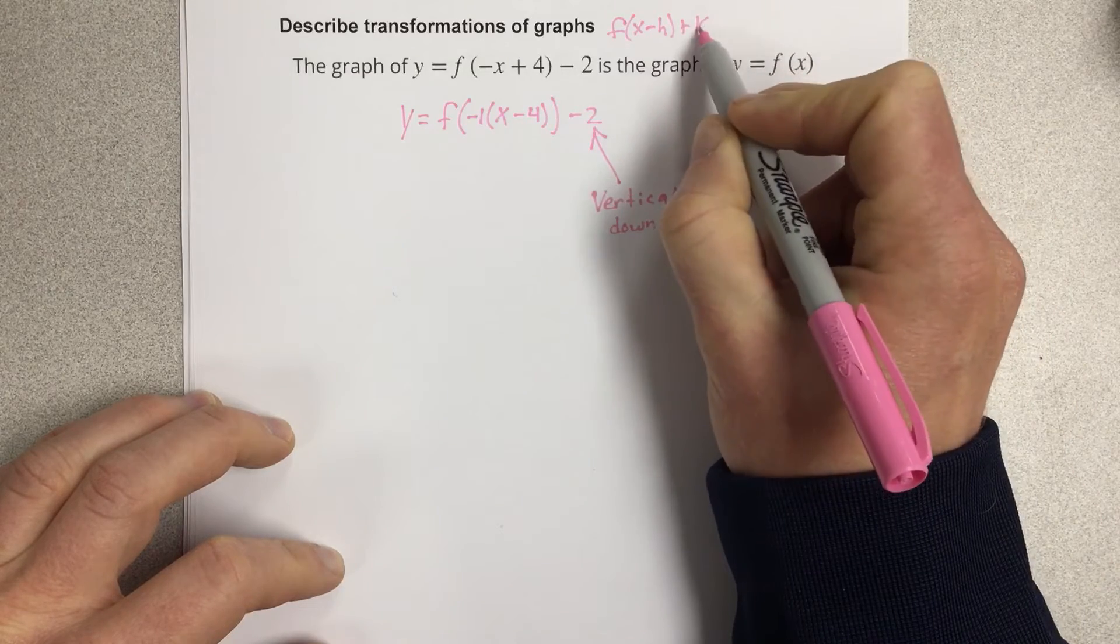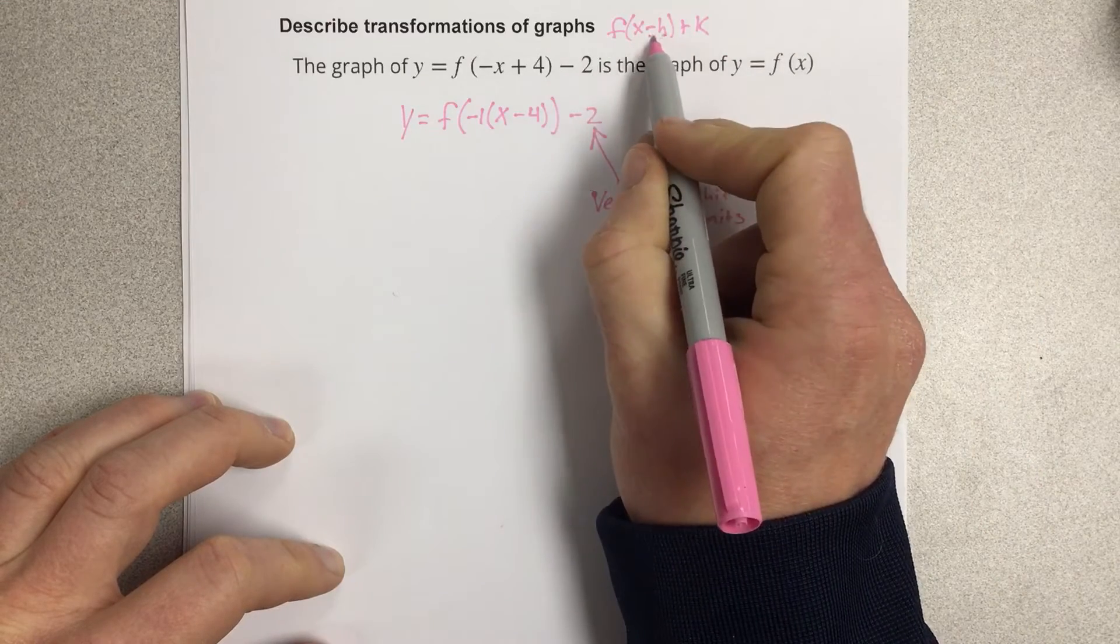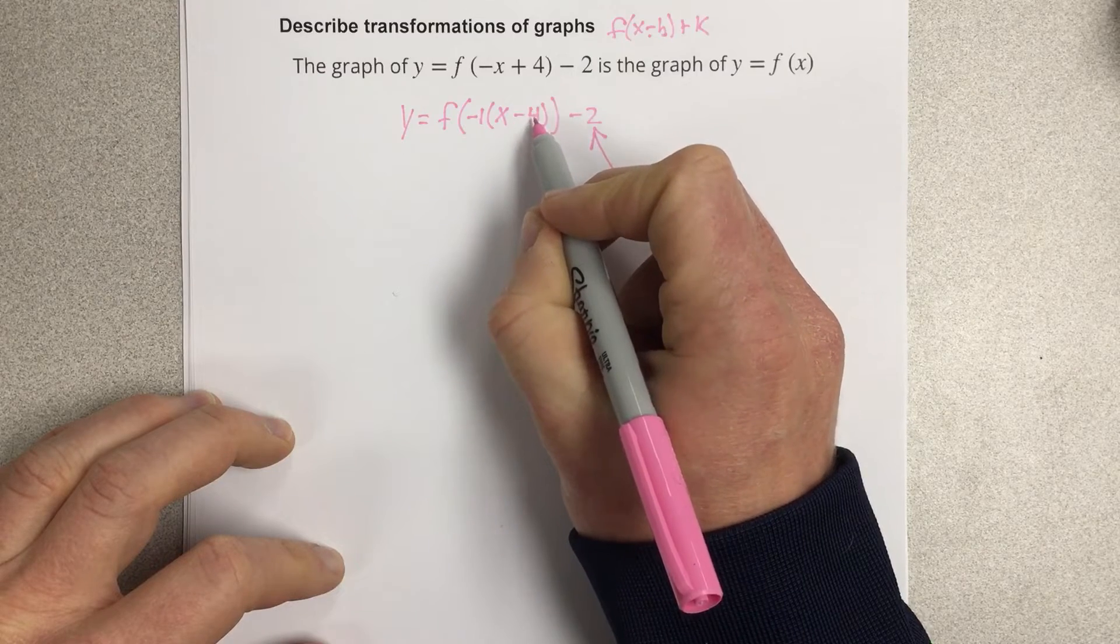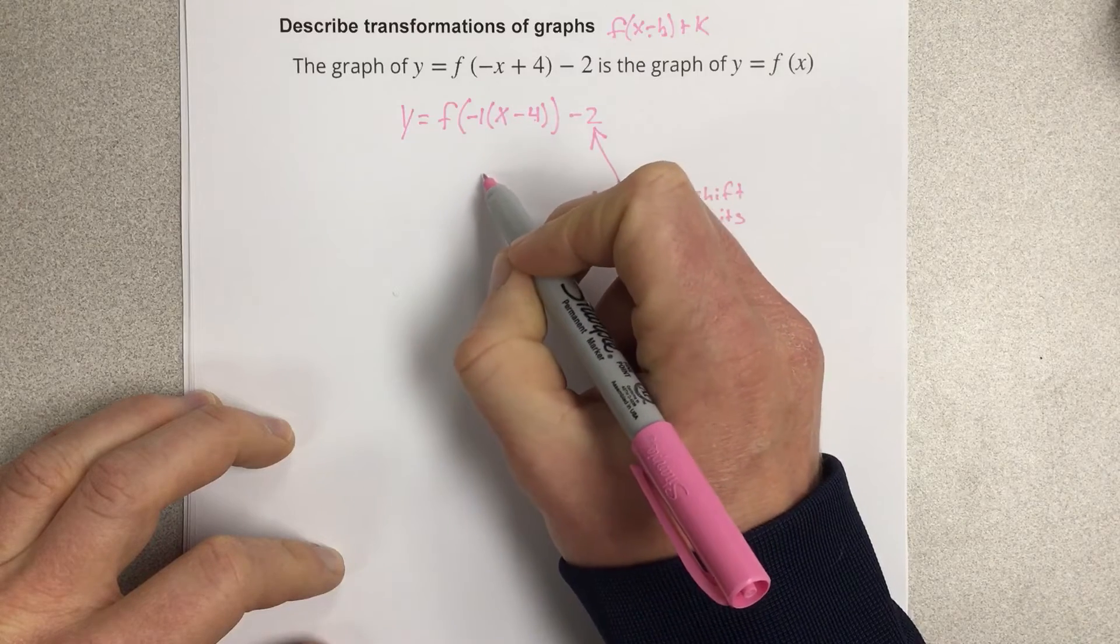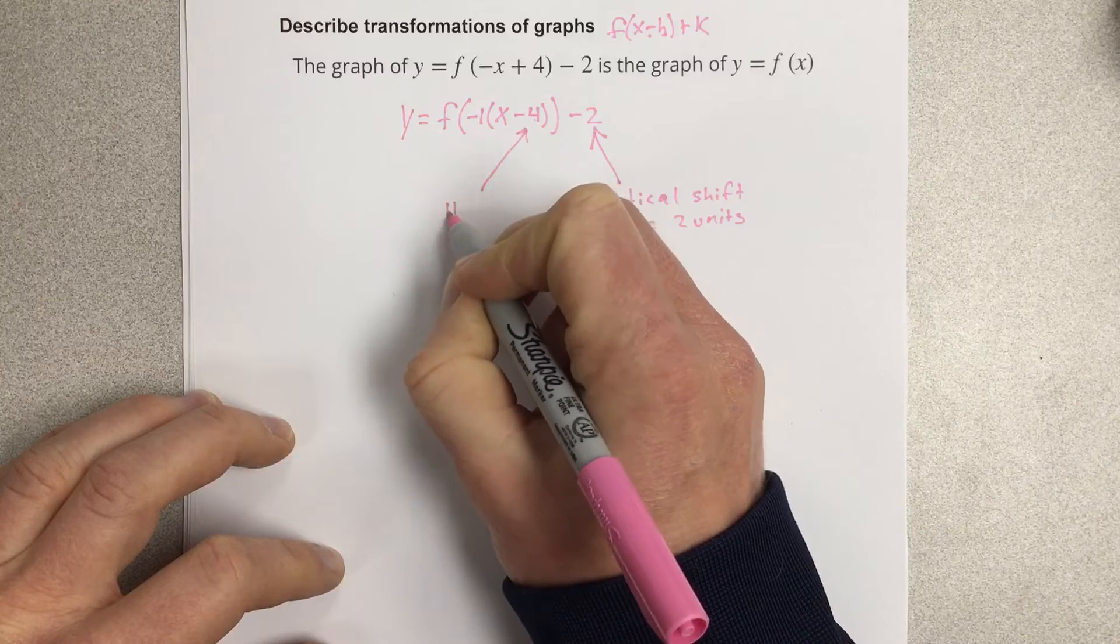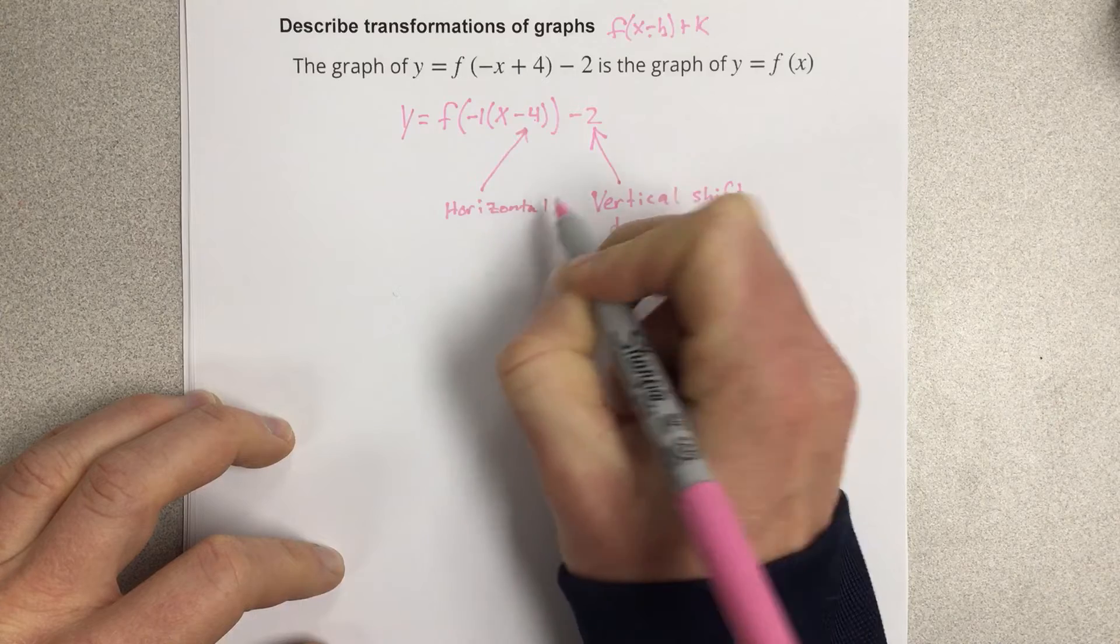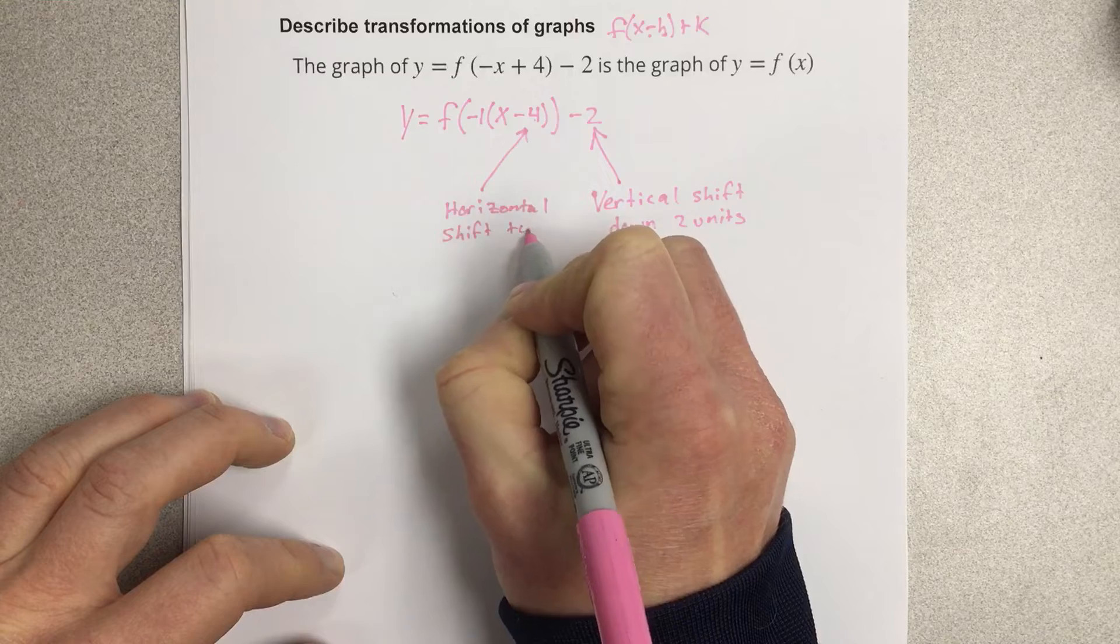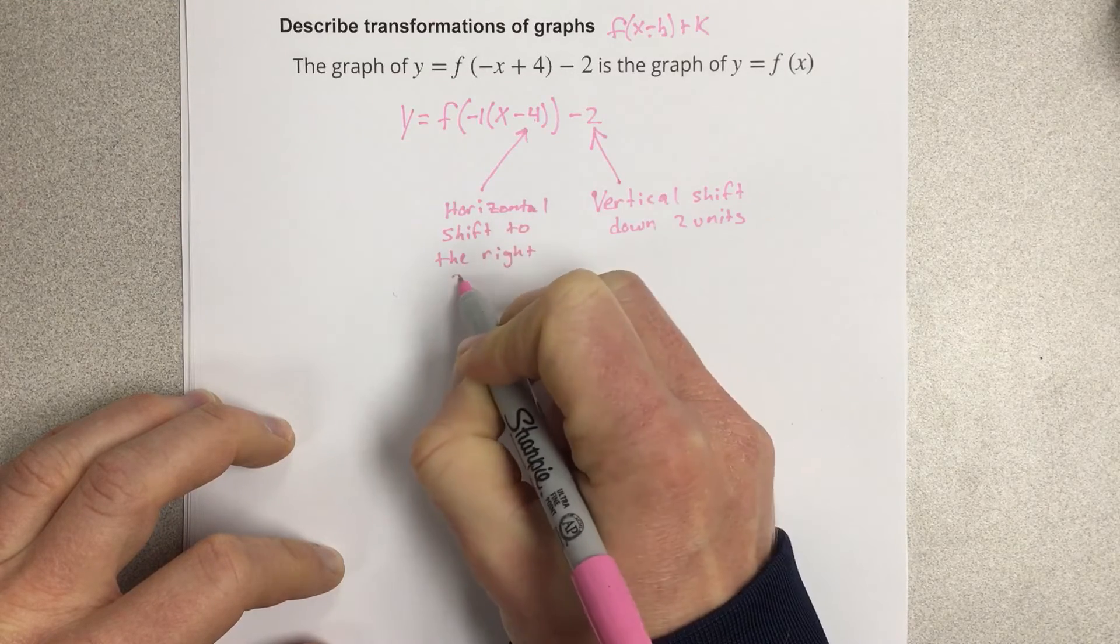The k part tells you the vertical shift. The h part tells you the horizontal shift. Now because it says minus h here, that means that technically the h is 4, so that is a right shift. It's always the opposite sign to what's in the middle. So this is going to be a horizontal shift to the right 2 units.